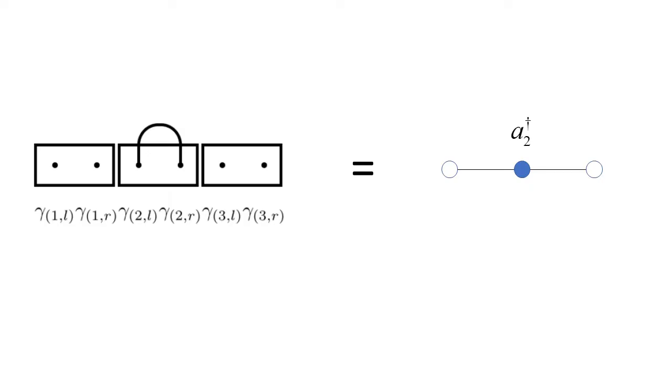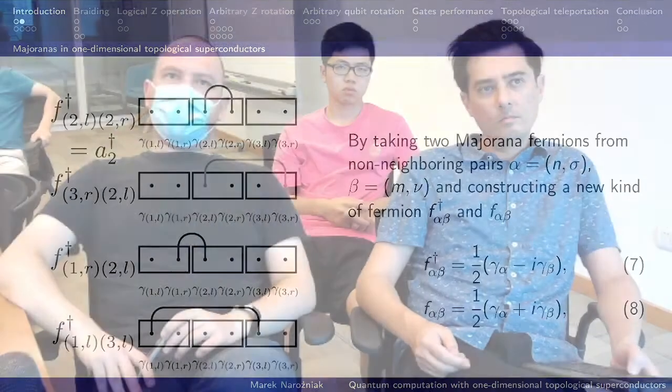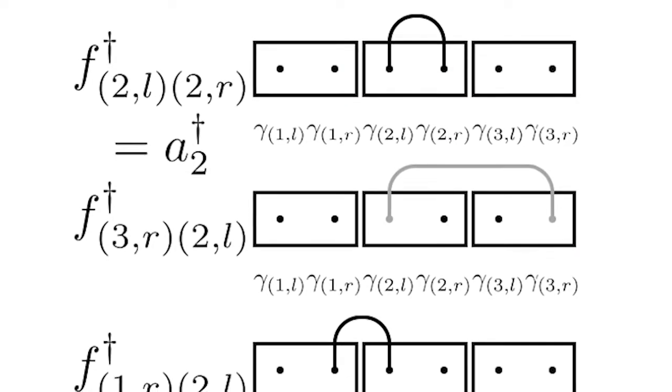So we use this notation to visualize it a bit. The rectangular boxes are the lattice sites and dots are Majorana operators, potential Majorana modes. And when two dots are connected, that makes a fermion, a regular fermion. So the first example on top pairs two Majorana modes in the middle site on the three sites chain, and that's a regular fermion.